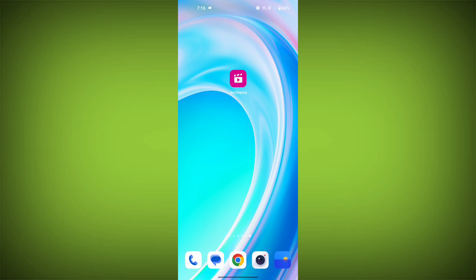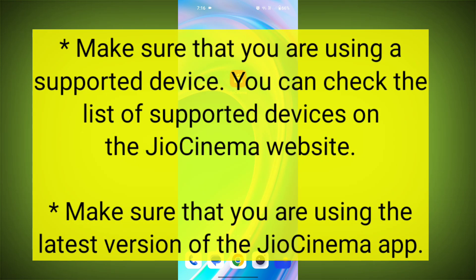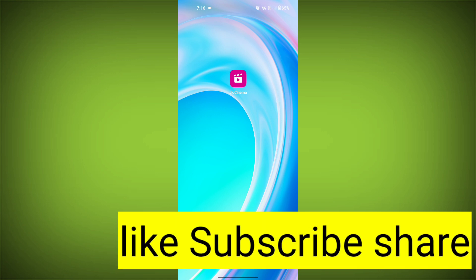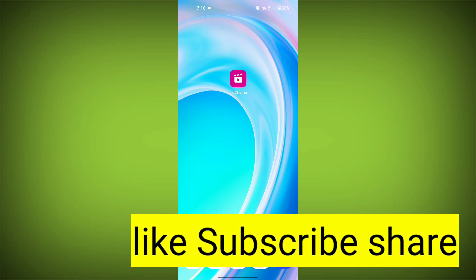Here are some additional tips to help you avoid GeoCinema errors. Make sure that you are using a supported device — you can check the list of supported devices on the GeoCinema website. Make sure you are using the latest version of the GeoCinema app and keep your device's operating system up to date. Avoid using public Wi-Fi networks whenever possible, as they can be less secure and reliable than private networks. Use a strong and reliable password for your GeoCinema account. By following these tips, you can help protect your account and avoid common errors.